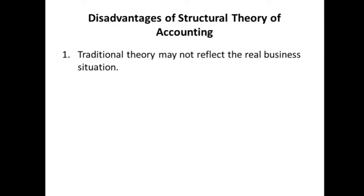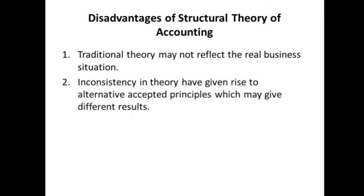Disadvantages of this theory: Traditional theory may not reflect the real business situation. Accounting practices have given rise to alternative accepted principles which may give different results, so the theory can be inconsistent. When there is inconsistency in a present theory, we need an alternative principle. Whenever there is an inconsistency, a new alternative principle will be developed, and the result given by following that principle may sometimes differ.